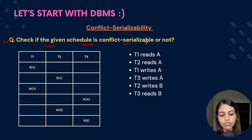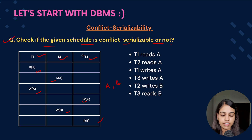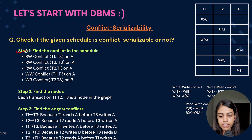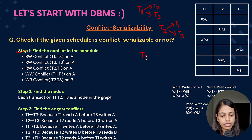Let's check if a given schedule with three transactions T1, T2, and T3 operating on data items A and B is conflict serializable. Step one is to find the conflicts in the schedule. For T1 we look in T2 and T3 for conflicts; for T2 we look in T1 and T3; for T3 we check T2 and T1.